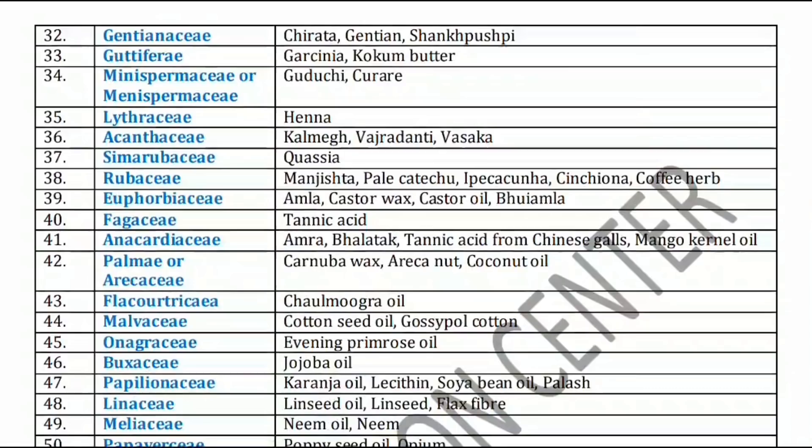Next family is Gentianaceae family. Gentianaceae family includes Chirata and Gentian — both are bitter plants — and Shankhpushpi. Shankhpushpi is used as a memory enhancer.